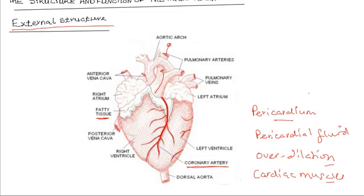The pulmonary artery branches into the right and the left — the right conveying blood to the right lung and the left conveying blood to the left lung. The aorta is the largest artery, carrying blood from the heart, and then branches so that each branch takes blood to different parts of the body.